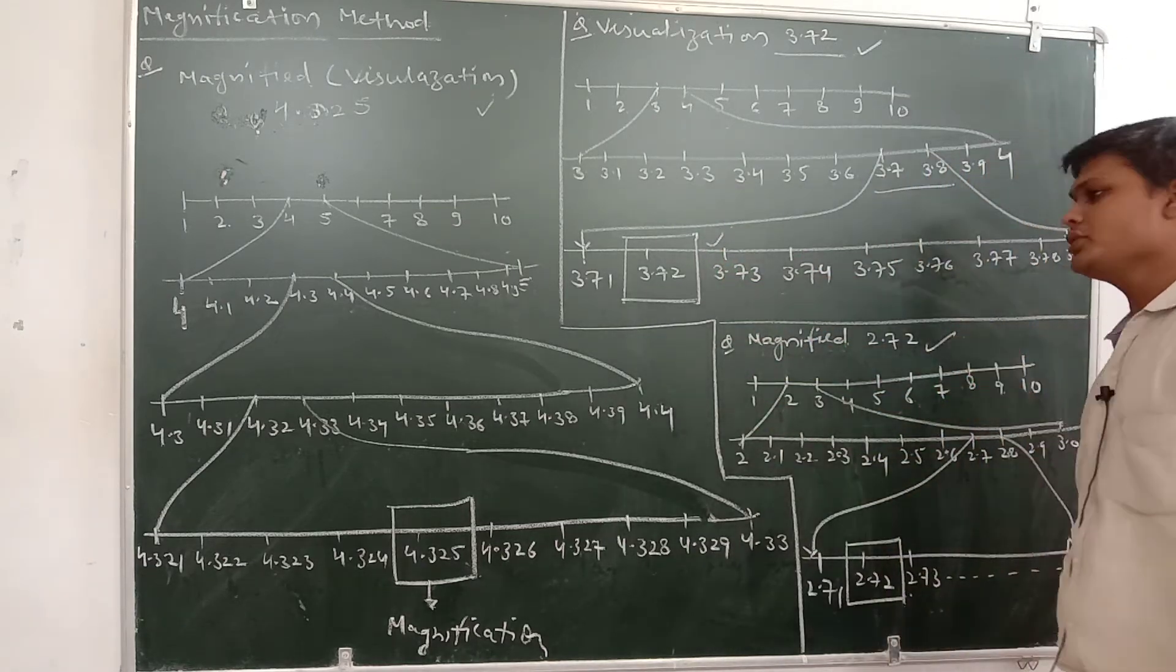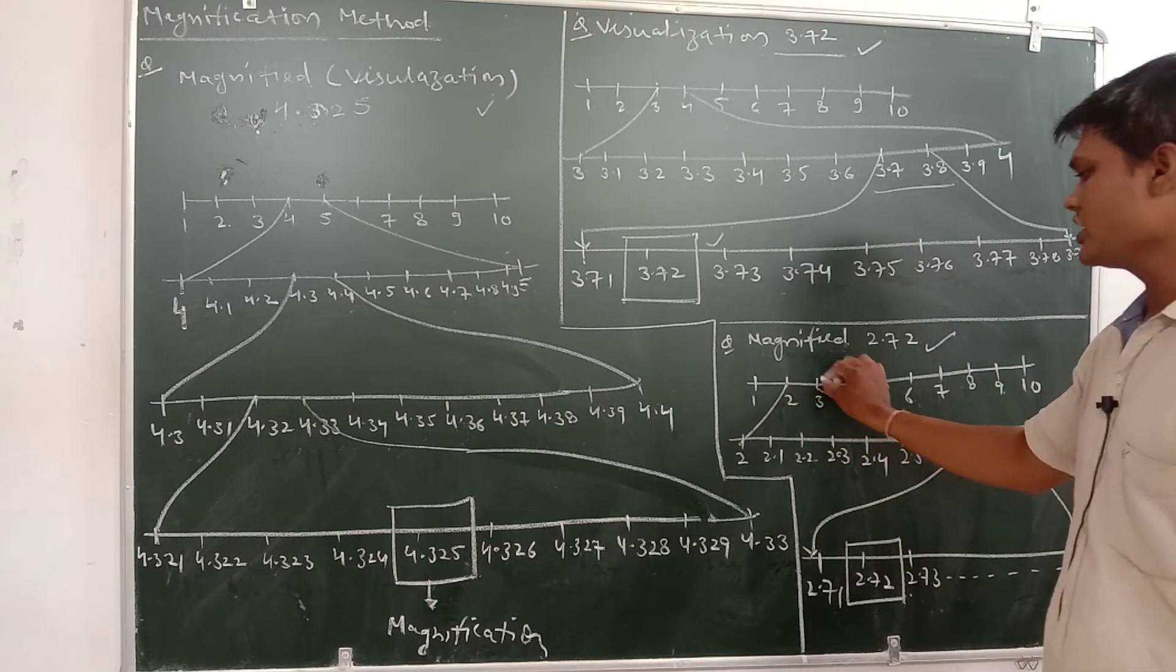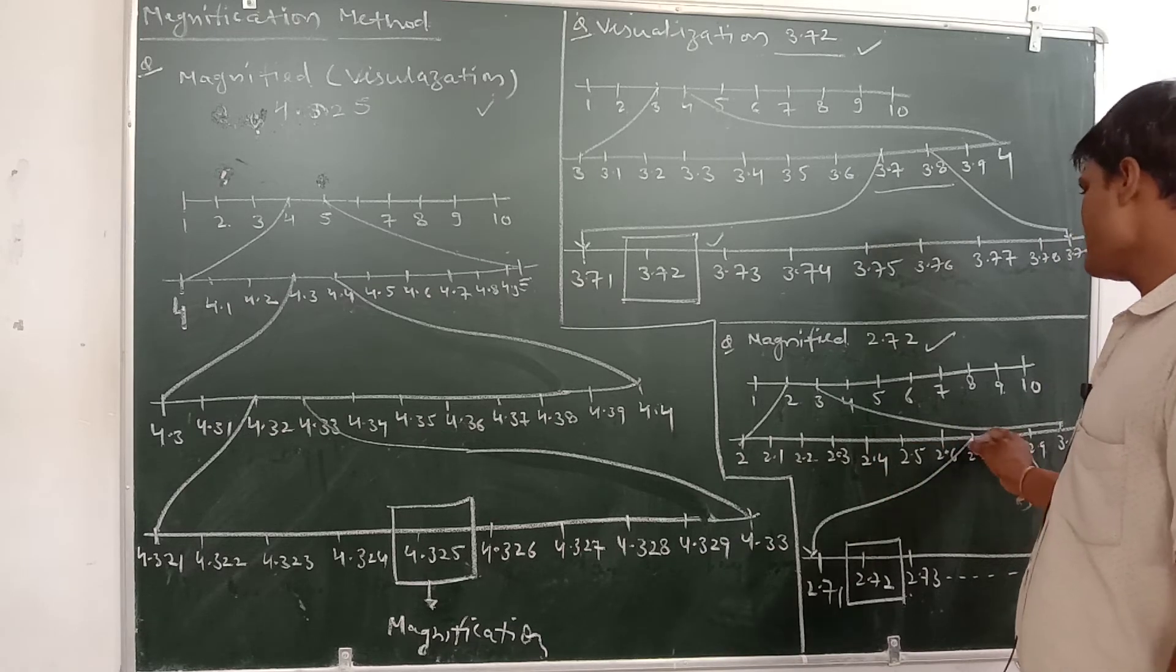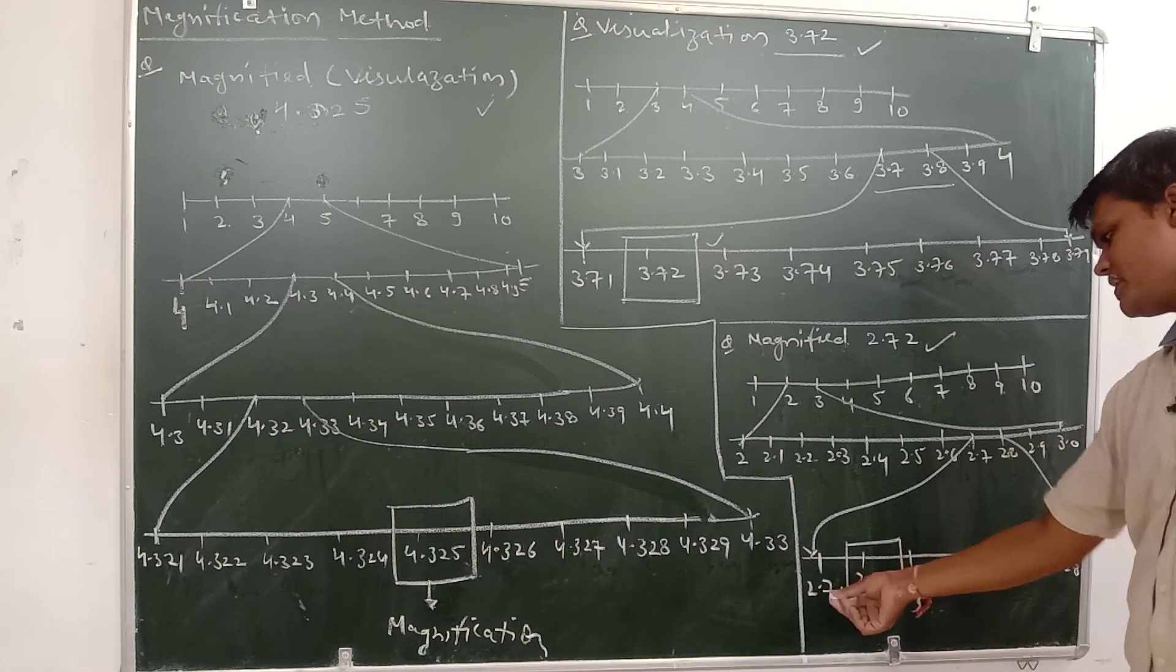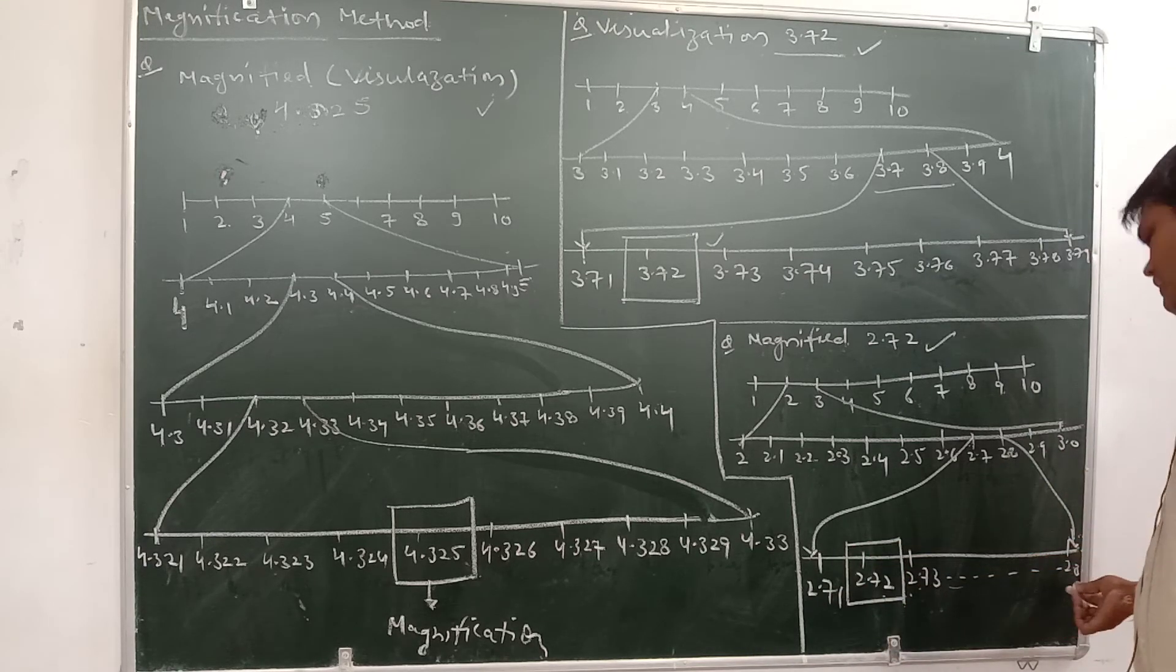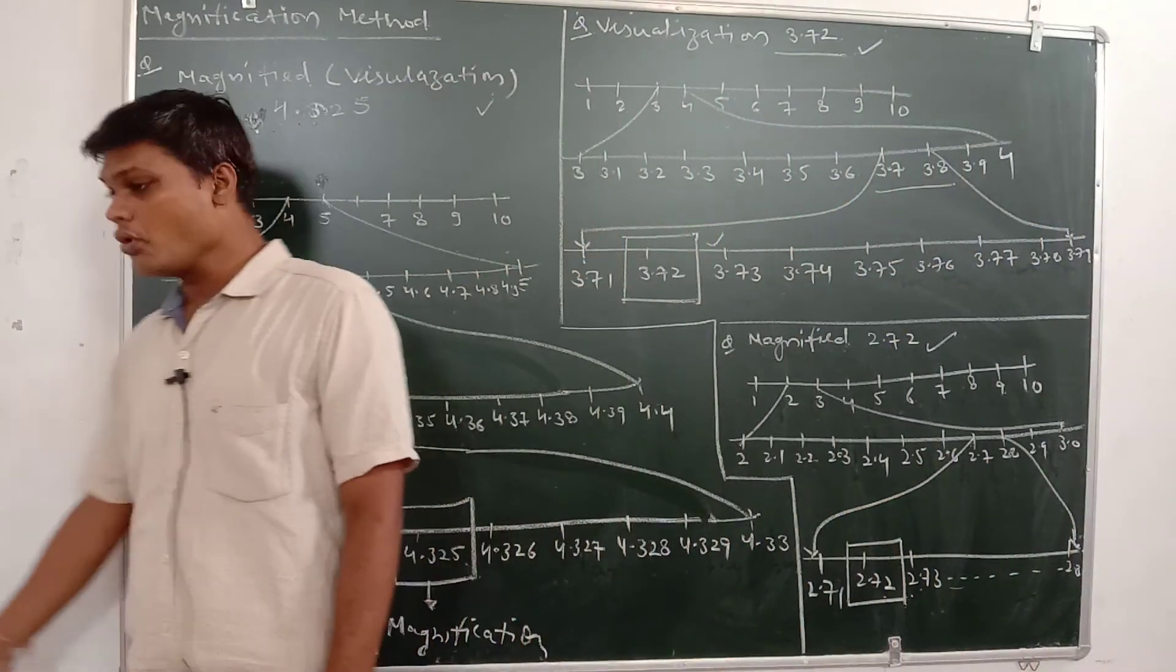Similarly another question comes: magnify 2.72. This will come between 2 and 3. Between 2 and 3, we got 2.7. Now where will 2.72 come? It will come between 2.7 and 2.8. So 2.71, 2.72 - this is magnified. Continuing like this we will write 2.8. In this way these questions are done.